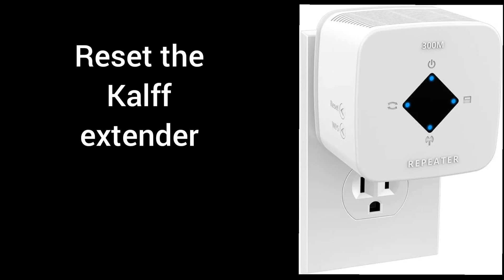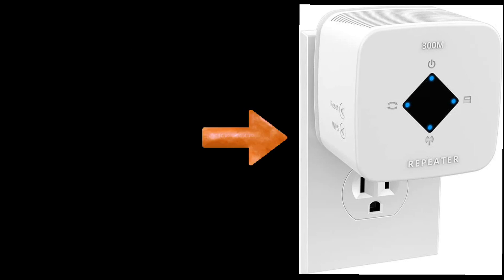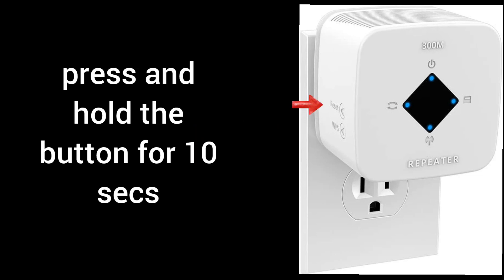Before we start any setup, I recommend you reset the extender first. Plug the extender into a wall outlet and wait for its power LED to turn stable. Then press the reset button on the side of the extender for around 10 seconds while it is still plugged in. After 10 seconds, release the button and wait for the power LED to turn stable again.